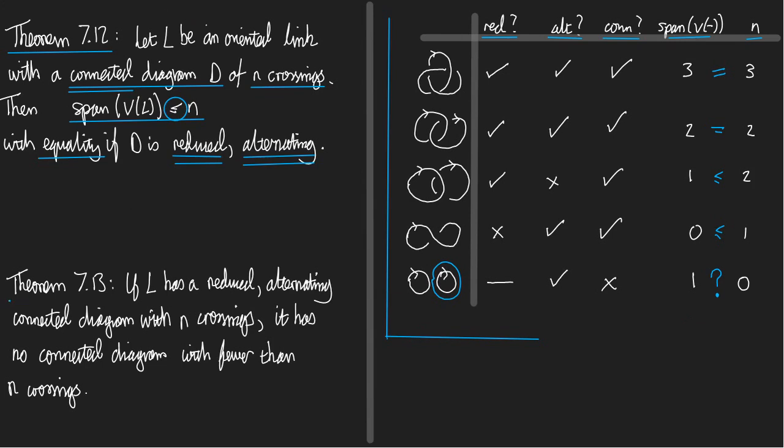So let's take a look finally at theorem 7.13. It's a simple consequence. If L has a reduced alternating connected, this phrase reduced alternating connected comes up the whole time. If L has a reduced alternating connected diagram with n crossings, then it has no connected diagram with fewer crossings. In particular, if it's a knot, then the diagram is connected. So if you have a reduced alternating diagram of a knot with n crossings, then that's the smallest number of crossings you can get at all. In particular, the trefoil, that's a reduced alternating connected diagram with three crossings. There is no diagram with two crossings, or one, or zero, so it can't be the unknot. So you see, this theorem very magically proves for us lots of results that we've been working quite hard to determine throughout the course. So that is the end of the mini lecture.